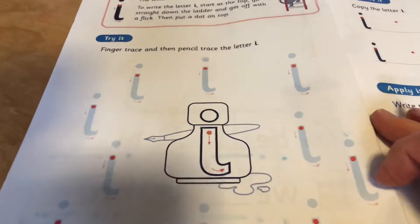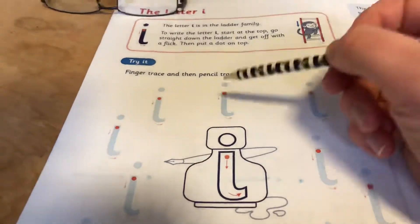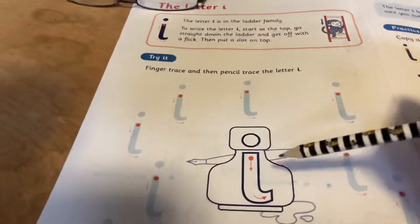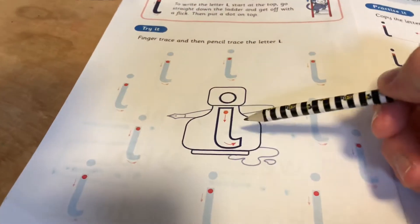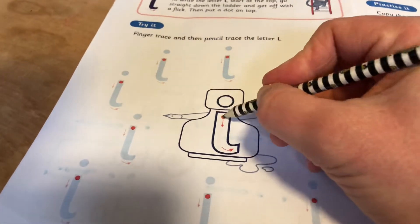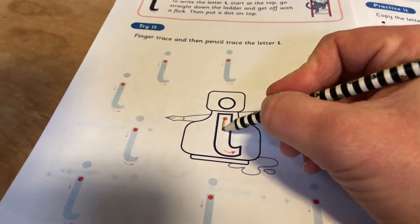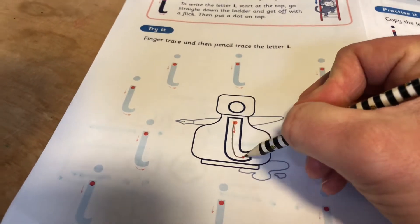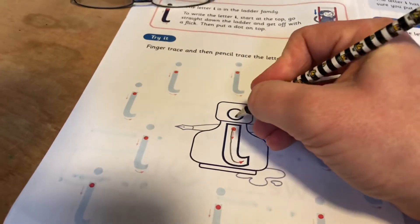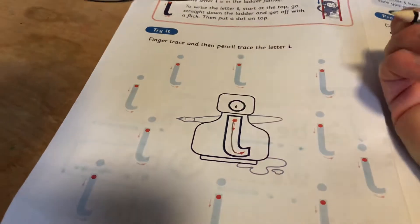Right, once you're ready, we'll come in and do it on your page now. So if we look at this ink pot, we can use the dot to help us start at the top. Come straight down and flick. Take your pen lid off and do a dot.